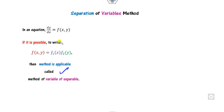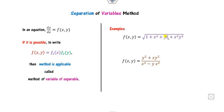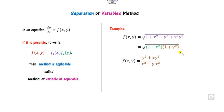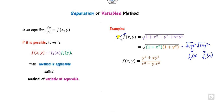Remember, this is the only restriction. For example, can you write this function as a first function of x and a second function of y? If I take y squared common, it can be written as (1 + x²)(1 + y²), which is f₁(x) times f₂(y) — functions totally dependent on x and y respectively. So the separable method is applicable on this problem.